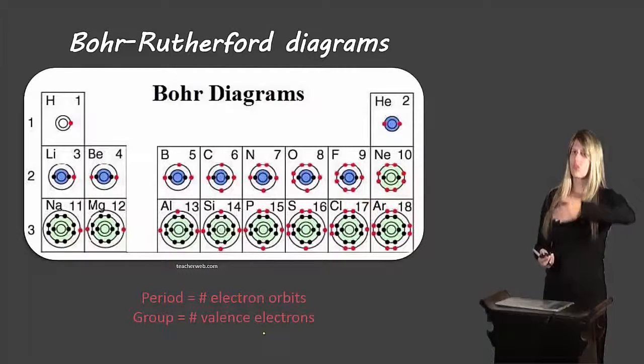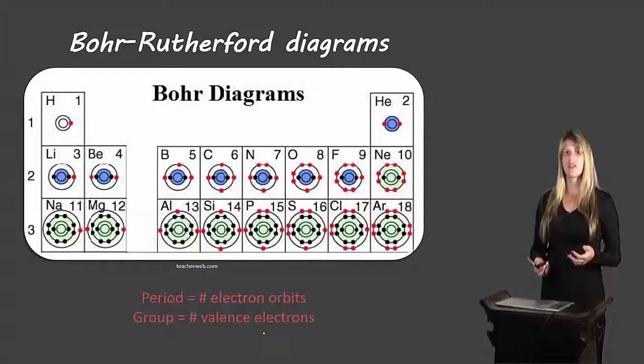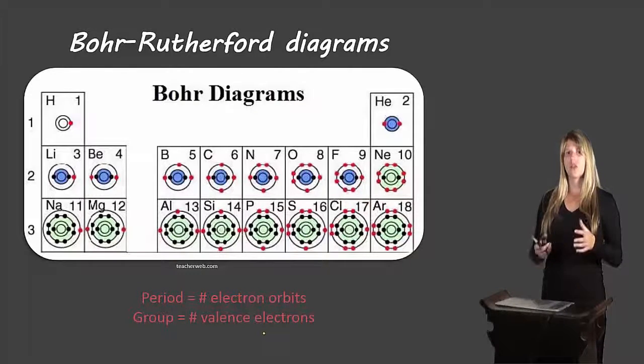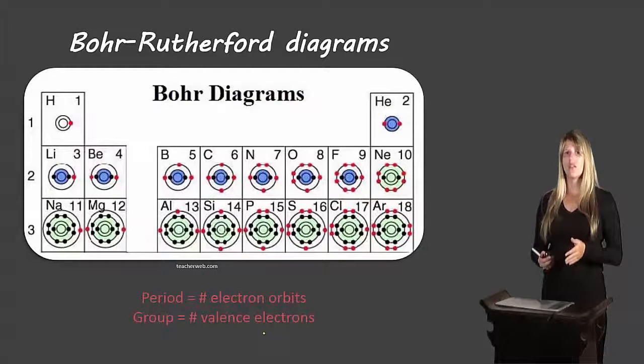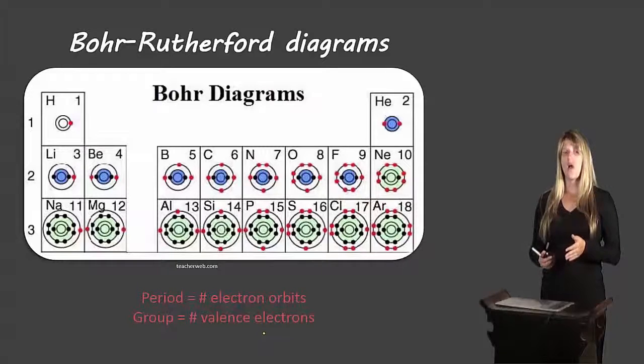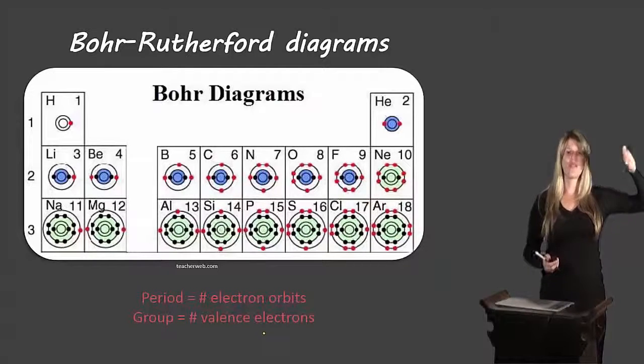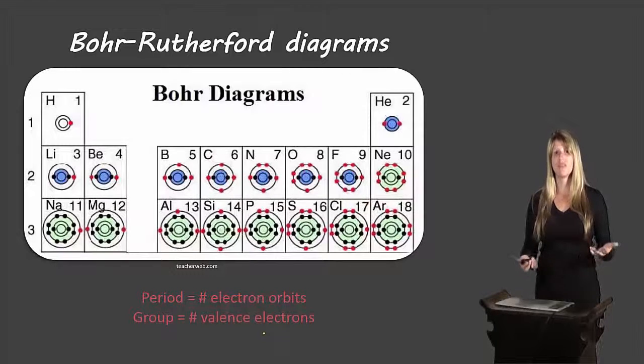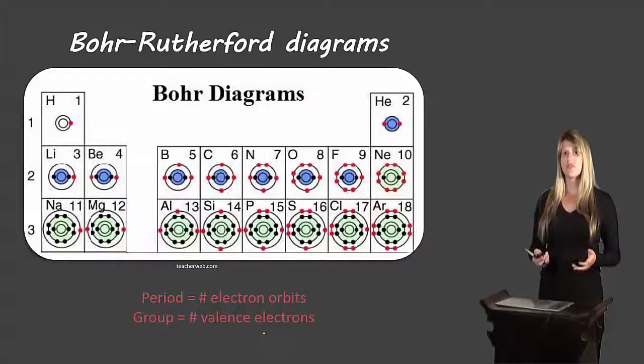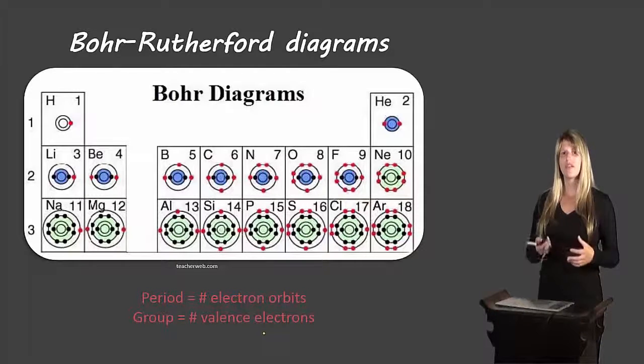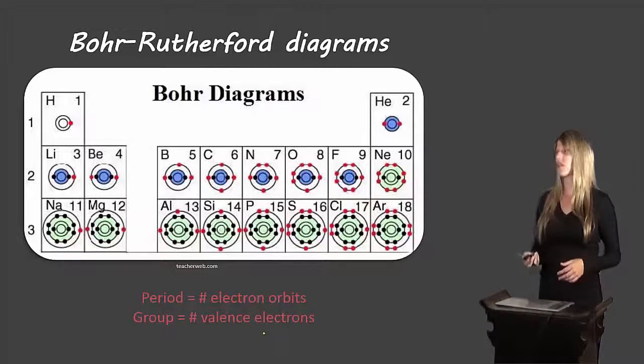Then if we look at the group, which is the column, that tells us how many valence electrons there is. Remember valence electrons represents the electrons in the outermost shell. So everything in that first column, that first family, has one electron in the valence shell. The next family has two, three, four, and so on, all the way to a full filled valence shell. So if we're looking to draw Bohr-Rutherford diagrams, this can give us a quick way to figure out how many electrons there are in each of the shells and how many shells there are in the first place.